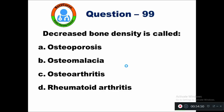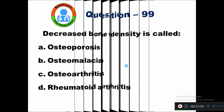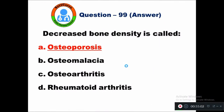Question 99: Decreased bone density is called — option A osteoporosis, B osteomalacia, C osteoarthritis, D rheumatoid arthritis. Decreased bone density is called osteoporosis. The right answer is osteoporosis.